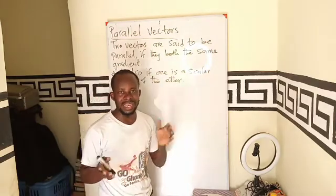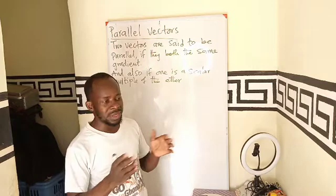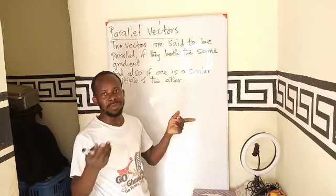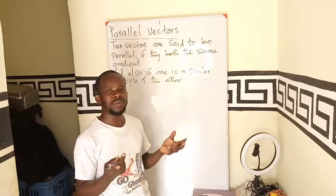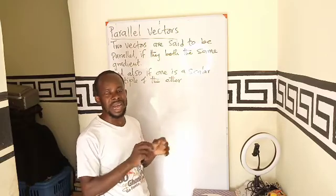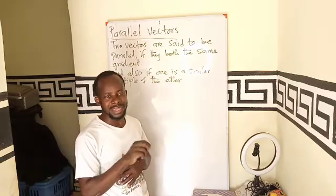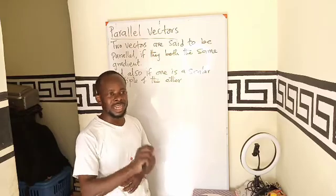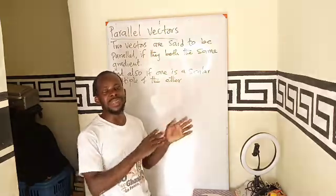Two vectors are set to be parallel. We all know that parallel lines are lines that have the same distance between them and they never meet. So if we have two vectors that are parallel, it means that both vectors have the same gradient. It means we find the gradient of vector A and that of vector B. It should be the same.